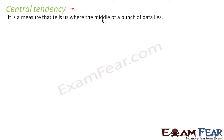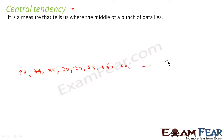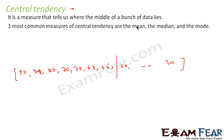You have a bunch of data and you want to know where the middle of the data lies — you can use central tendency. For example, you have exam scores: 90, 80, 80, 80, 70, 70, 68, 65, 60 and so on. You want to find the central value — somewhere in the middle. There are three measures of central tendency: mean, median, and mode.